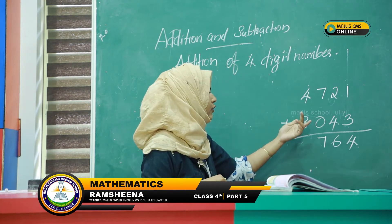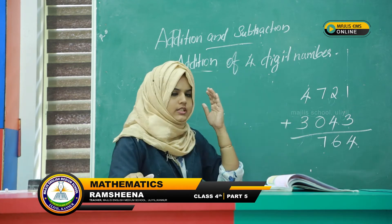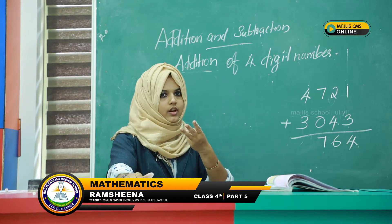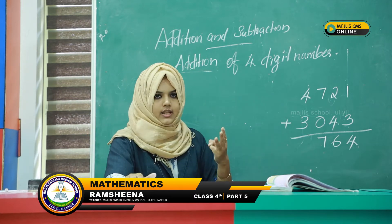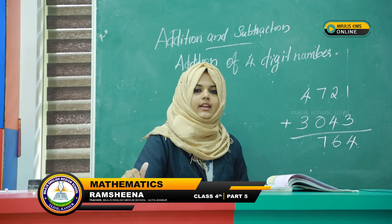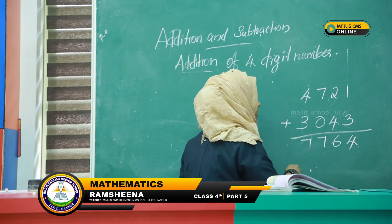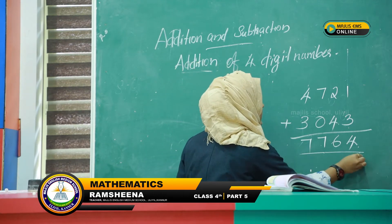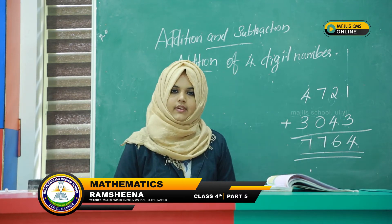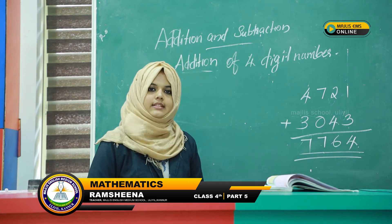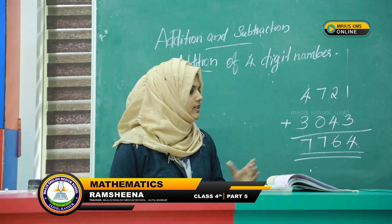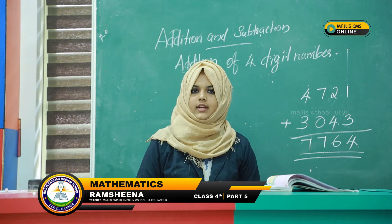And last one: 4 plus 3. Assume 4 in your mind and 3 with your fingers — 4, 5, 6, 7. The number is 7. Then what is the answer? 7764. This is one method of addition.